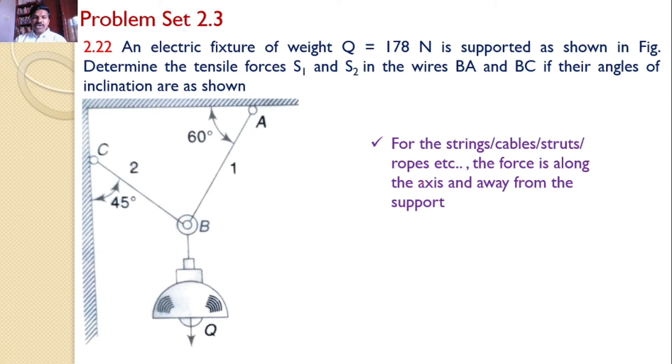The forces are along the axis and away from the support. If you consider AB string from point A, the force may be like this, and from point B, the force will be like this. Similarly, for string BC, if you look from point C, the force is away from the support.